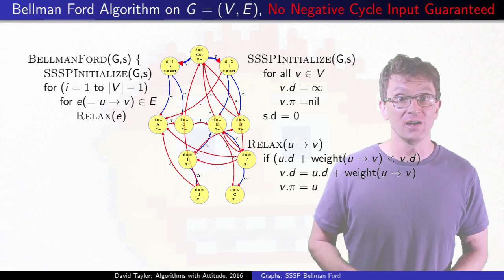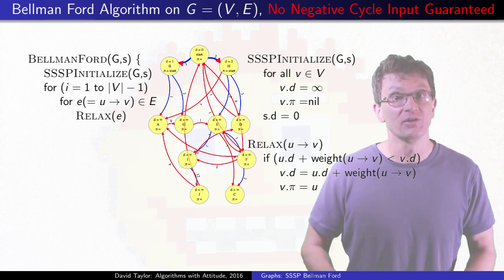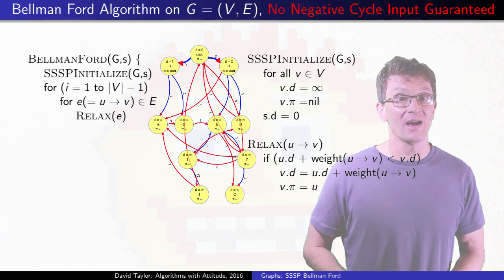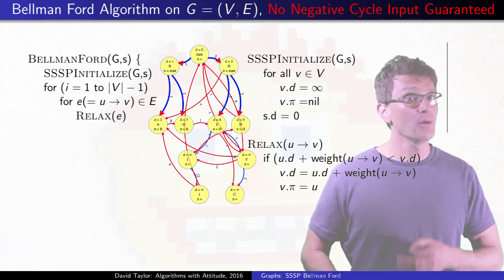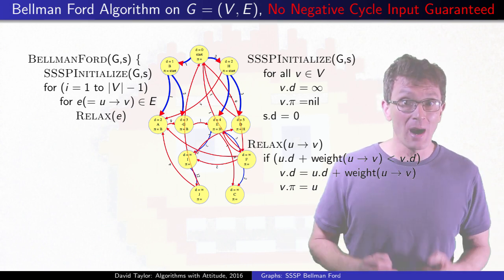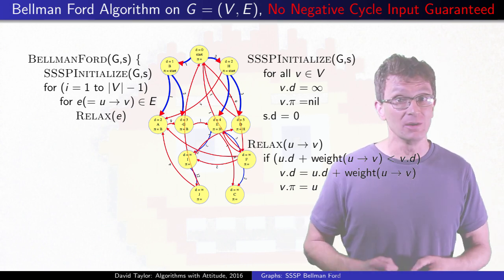After that first level is finished, relaxing all of the edges a second time will relax edges from the first to the second level, finishing it. We don't know what the tree is, but with V minus 1 edges, it can't have more than V minus 1 levels.